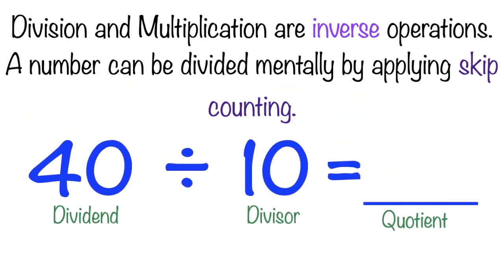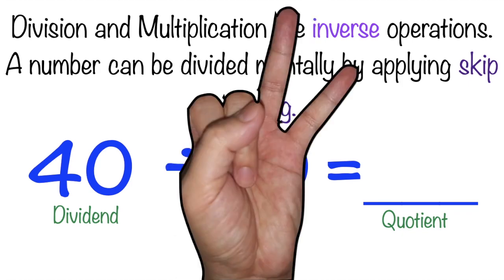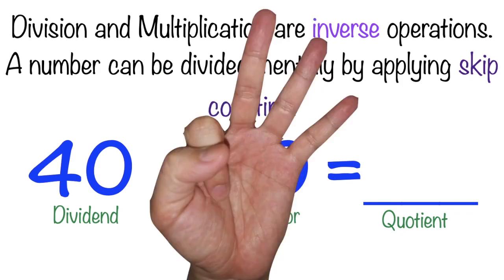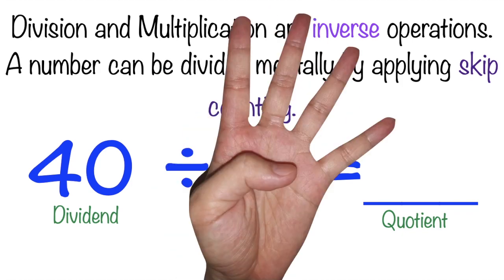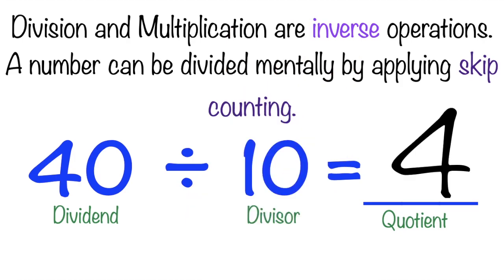Let's have this example: 40 divided by 10 equals blank. How many 10s do you have in 40? Let's skip count by 10 until we reach 40 — 10, 20, 30, 40. We have 4 tens, so 40 divided by 10 equals 4.